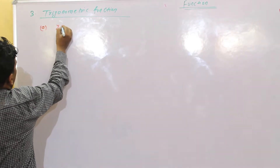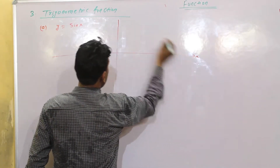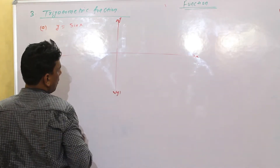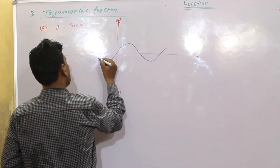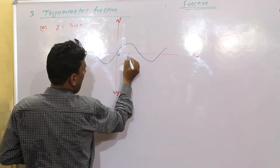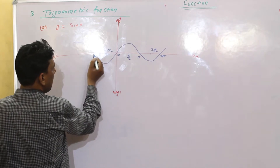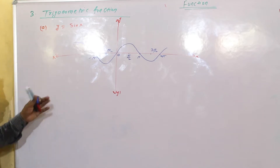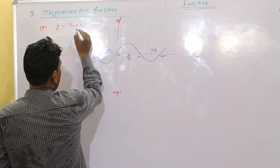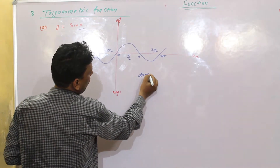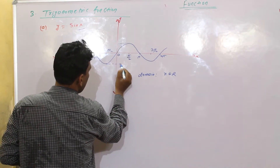First है y = sin x. यह graph बिल्कुल basic है - इसका graph हमने 11th class में देखा था। यहाँ पे 0, यहाँ पे π/2, यहाँ पे π, 3π/2, 2π, और negative side पर −π/2, −π, −3π/2. यह sine का basic graph है। यह function continuous है minus infinity to plus infinity - कहीं टूटा हुआ नहीं है। इसका output maximum 1 और minimum −1, तो range देखें।